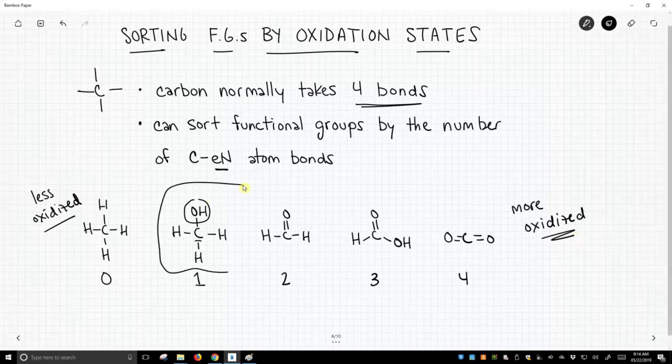And we will work a lot of our chemistry in this part of the box right here, from one, two, or three bonds to an electronegative atom. This is a quick way to sort functional groups and help us think about the chemistry and think about what category we are working with for a particular functional group.